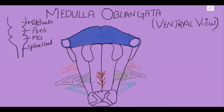Starting with the ventral view — first we have the pons. Below the pons we have the medulla oblongata, the anterior aspect.